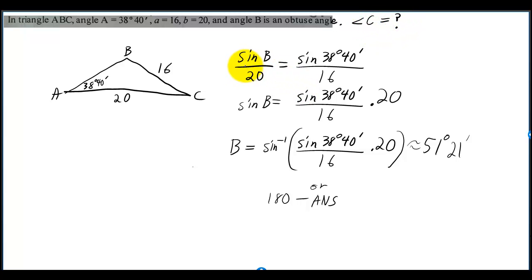We can use the law of sines to figure out angle B, and then we'll add up angle B and angle A and subtract from 180 to find angle C. So I set up the law, then I multiplied by 20, and then I took the sine inverse.